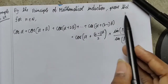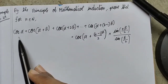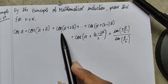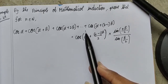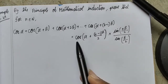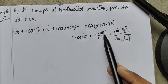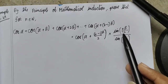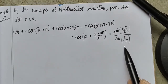By the principle of mathematical induction, prove that for n belonging to the natural numbers: cos α + cos(α + β) + cos(α + 2β) + ... + cos(α + (n−1)β) equals cos(α + (n−1)β/2) · sin(nβ/2) divided by sin(β/2).